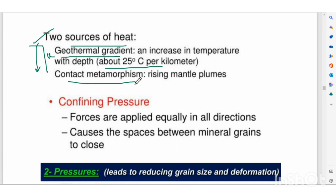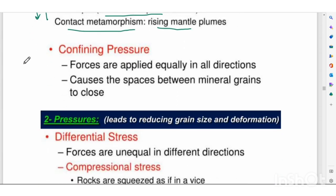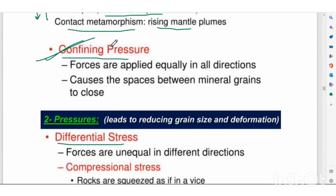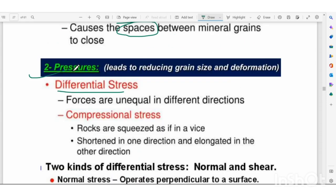In the case of regional metamorphism, the rising mantle plume is the source of heat. There are two types of pressure: confining pressure and differential stress. Confining pressure — also called lithostatic or hydrostatic pressure — applies force equally in all directions.